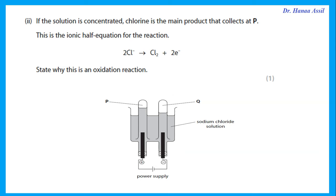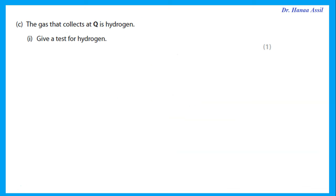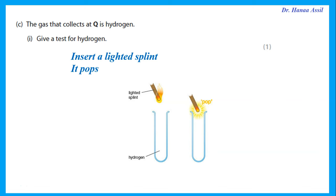When the solution is concentrated, chlorine is the main product at electrode P. This is an oxidation reaction because the chloride ions lose electrons — loss of electrons is oxidation. The gas that collects at electrode Q is hydrogen. The test for hydrogen: insert a lighted splint — it pops. Note: lighted, not glowing.